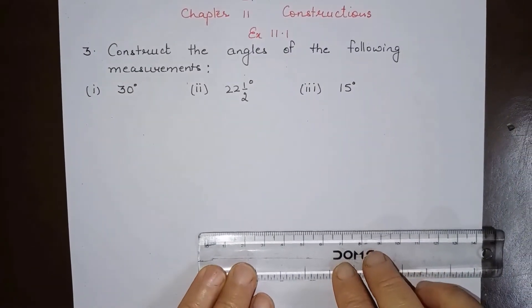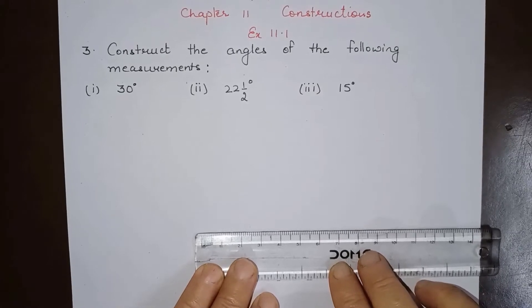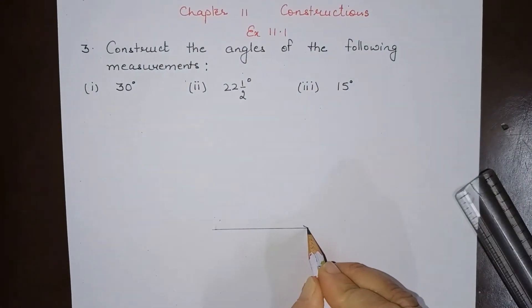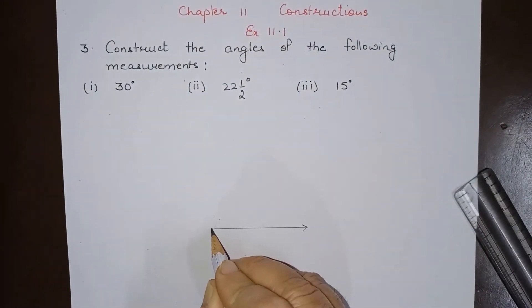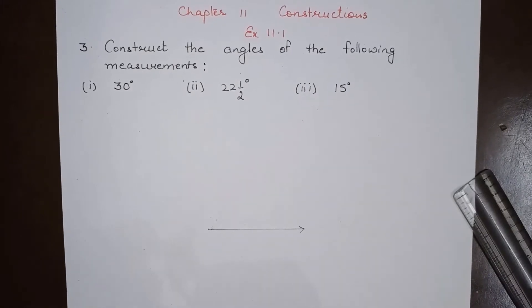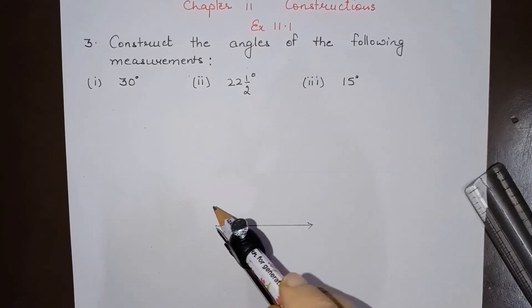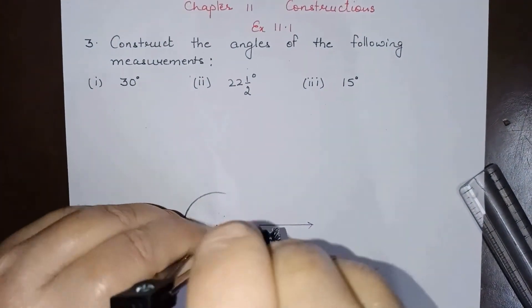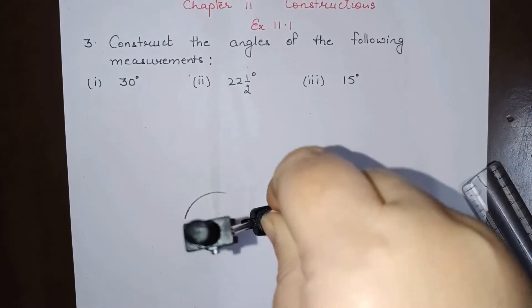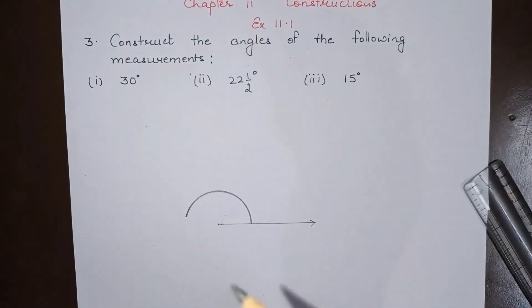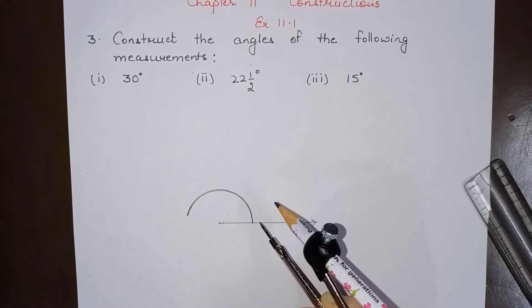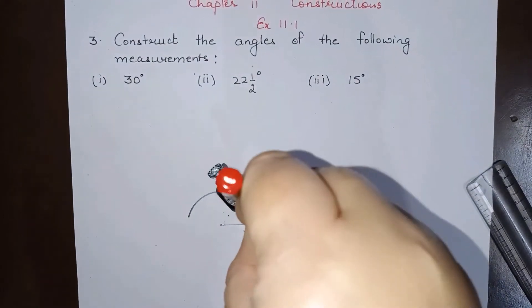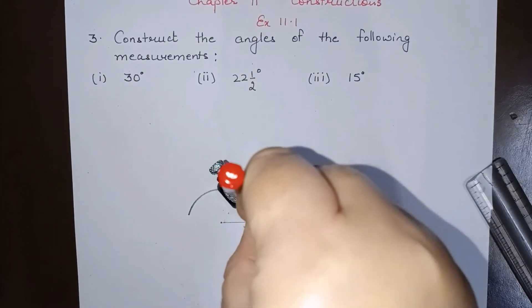The procedure is: first we will draw a ray, and then draw an angle of 60 degrees first. We will take our compass, draw one arc of a suitable radius, and then taking this point draw another arc like this. This is an angle of 60 degrees.